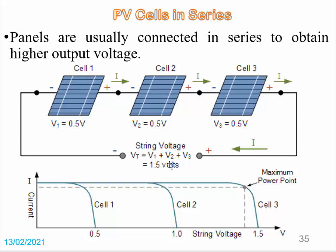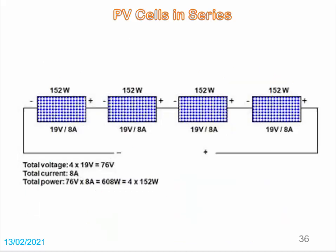What will be the total voltage? Suppose each solar cell produces 0.5 volts. In series, the total voltage is V1 plus V2 plus V3, so 0.5 plus 0.5 plus 0.5 equals 1.5 volts. With one cell the maximum is 0.5V, with two cells it is 1 volt, and with three cells it is 1.5 volts.